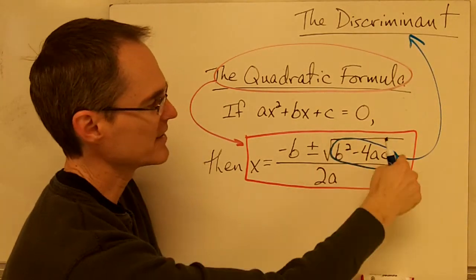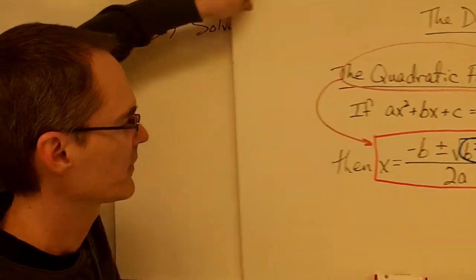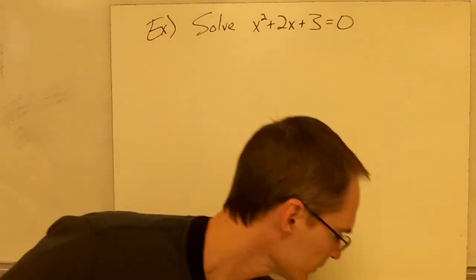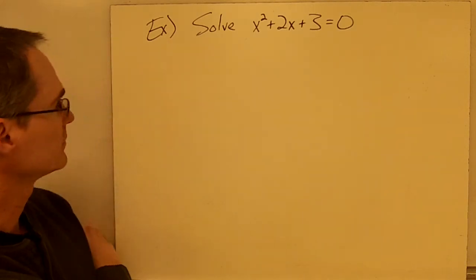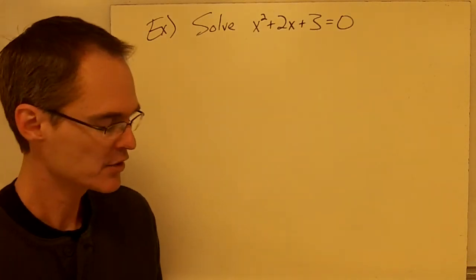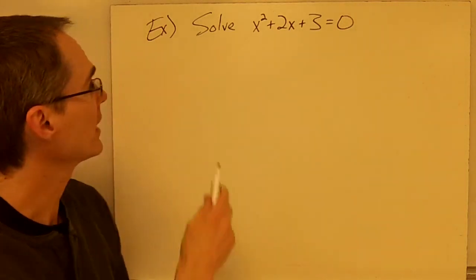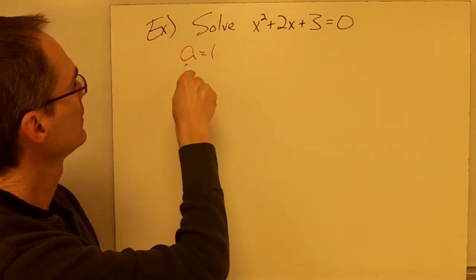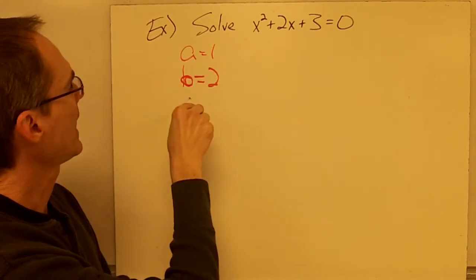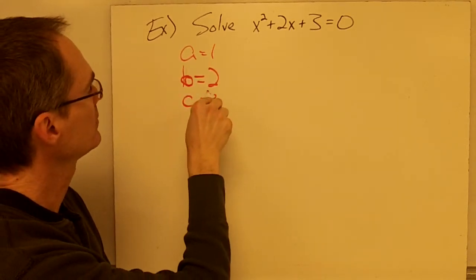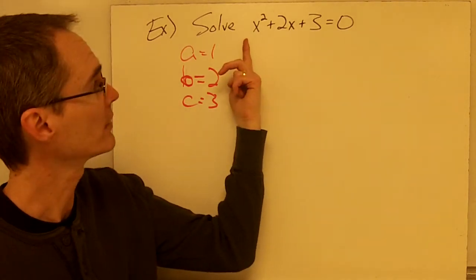This piece under the radical sign is a particularly important part of the quadratic formula, and we're going to see why right now. Take a look at this example: solve the quadratic equation x squared plus 2x plus 3. I'd typically start by trying to factor, so I identify a equals 1, b equals 2, and c equals 3. This is an easy case because the coefficient for x squared is 1.